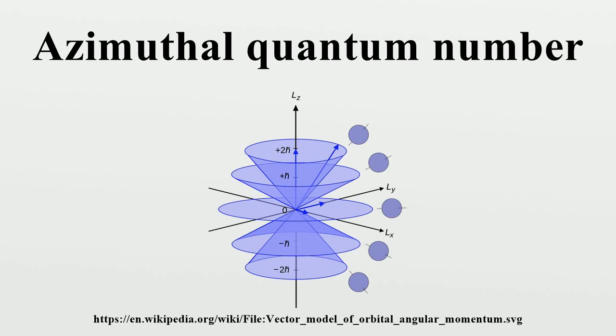It is also known as the orbital angular momentum quantum number, orbital quantum number, or second quantum number, and is symbolized as l.